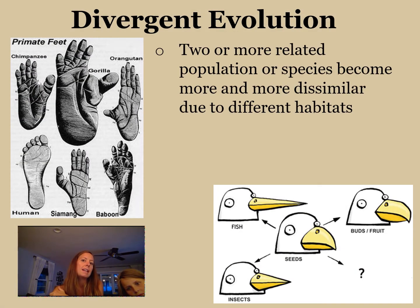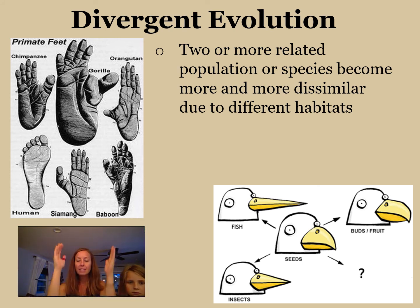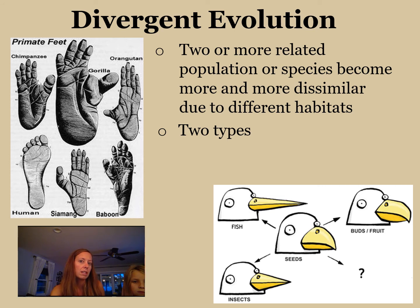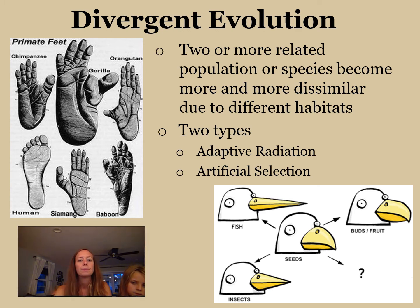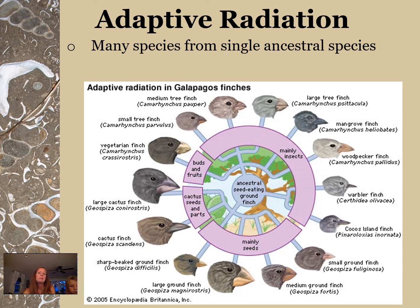Divergent evolution is when two or more related populations or species become more and more dissimilar because they live in different habitats. They start the same and become different — they diverge — and this causes them to have homologous structures. There are two types: adaptive radiation and artificial selection. Adaptive radiation is when many species come from one single ancestral species — like Darwin's finches, which started on the mainland, got blown to different islands, and each adapted to their specific island through natural selection.